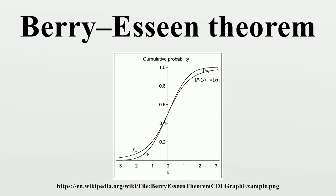There exists a positive constant C such that if x1, x2, ... are i.i.d. random variables with E[X]=0, E[X^2]=σ^2>0, and E[|X|^3]=ρ<∞, and if we define the sample mean,